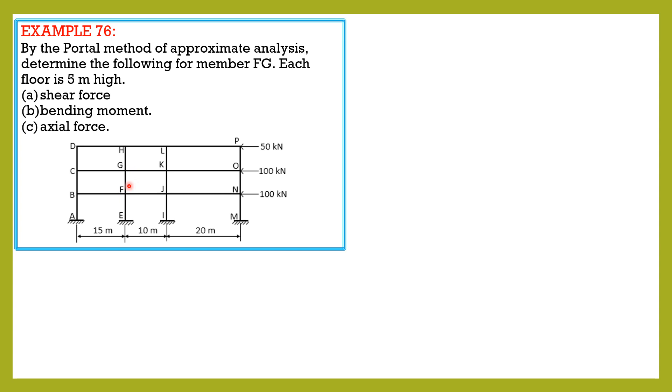So this is member FG. Since this is by portal method, let's call the shear here as v3, external 2v3, 2v3, and v3. At this level we have v2, 2v2, 2v2, and v2. Then at this level v1, 2v1, 2v1, and v1.